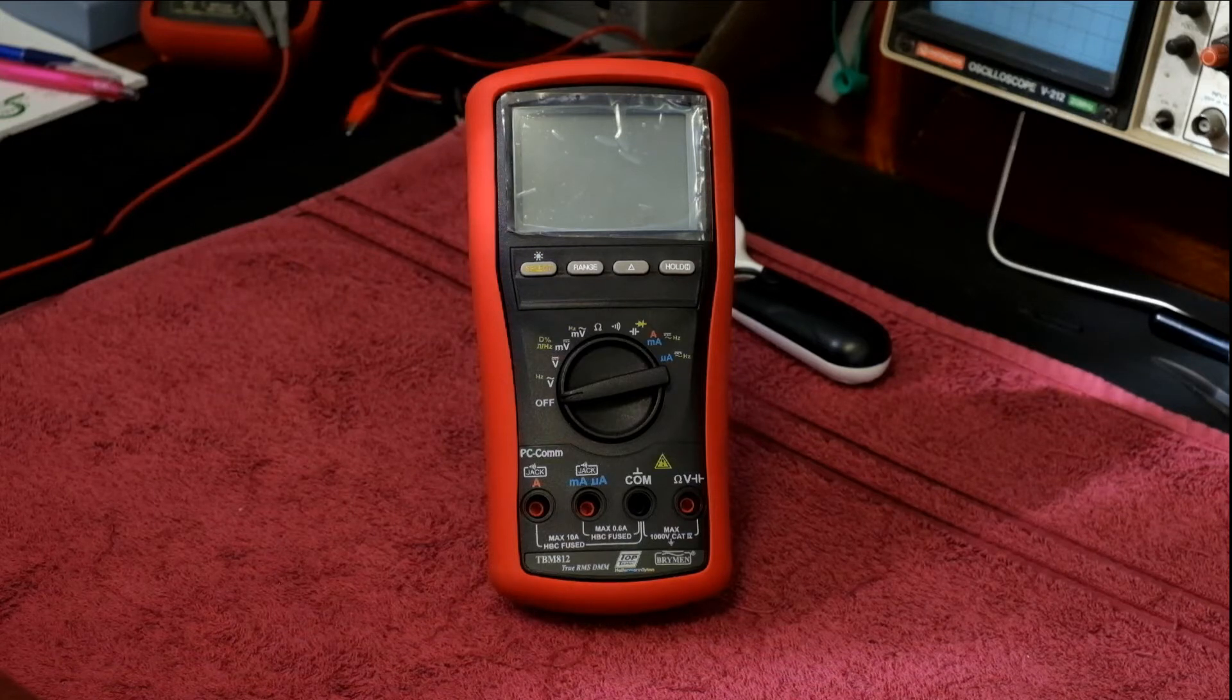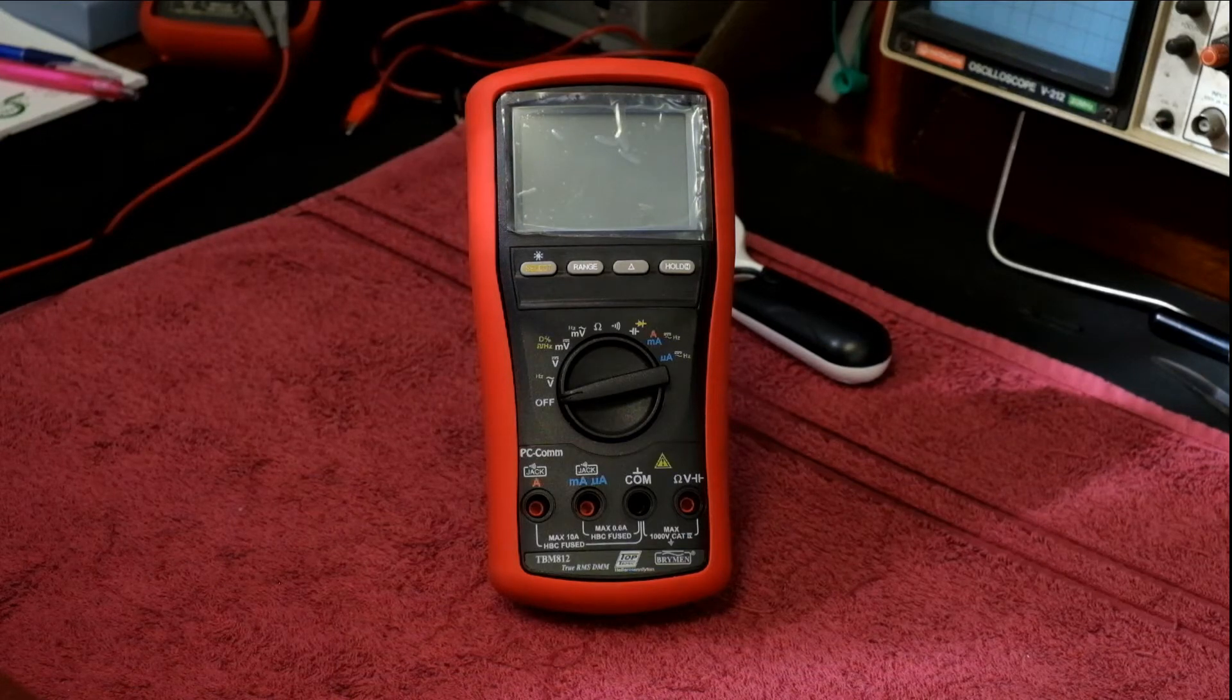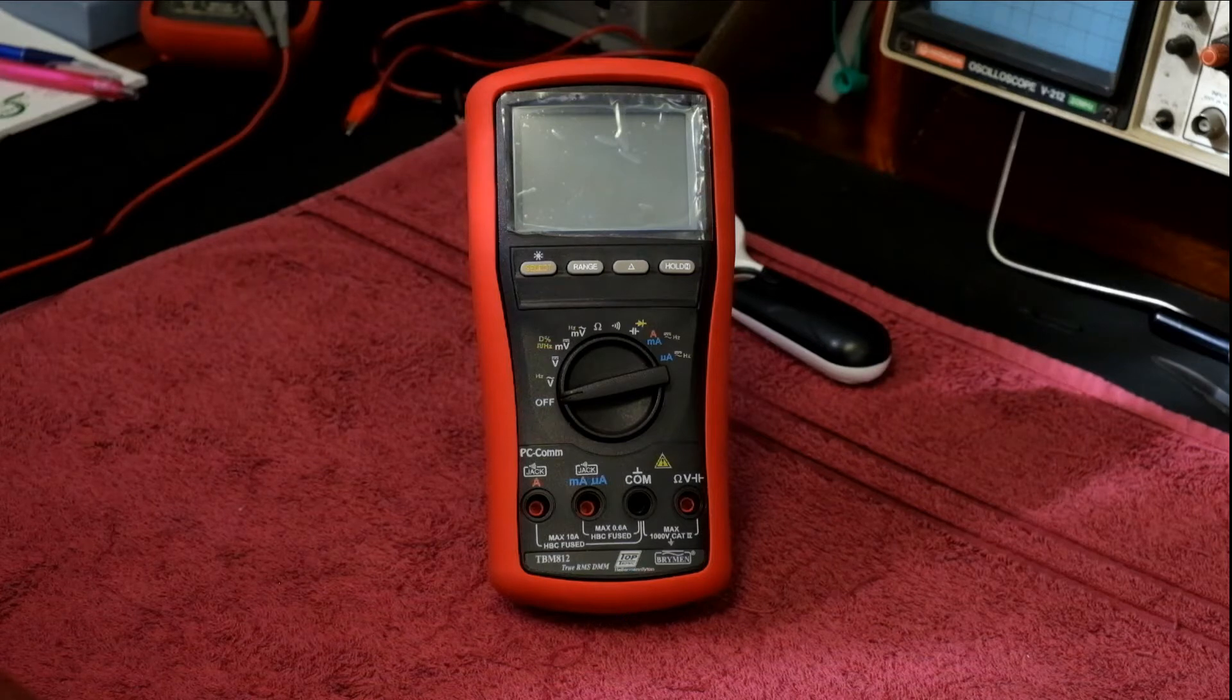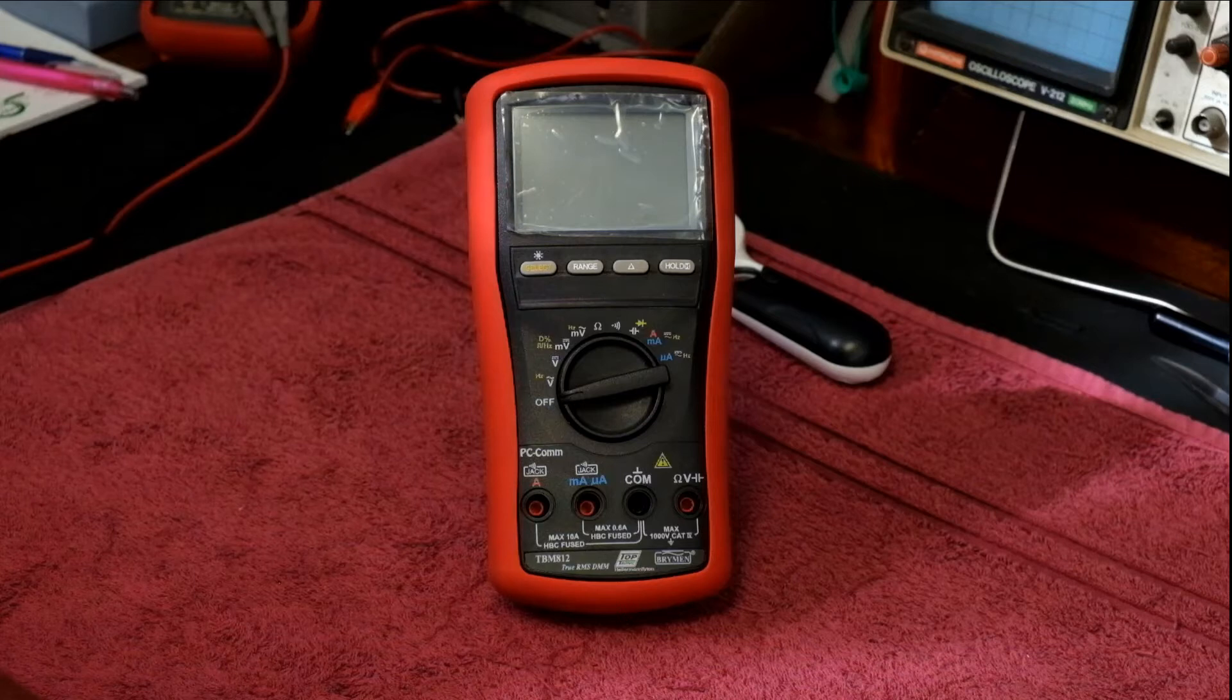Now if you watch the review on the TBM811 you'll know what its features are. It's basically volts AC, volts DC, millivolts AC and DC, capacitance, diode, resistance, continuity, amps, and then of course milliamps and microamps. Pretty much the same as what you have in this meter over here.